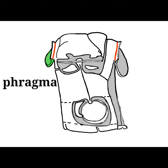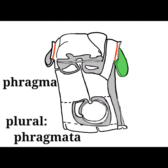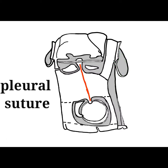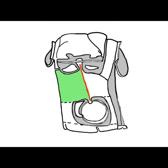The phragma is located at the anticosta of the mesotergum, metatergum, and the first abdominal tergum, giving a total of three phragmata. The major area of the pleuron is divided by the pleural suture.